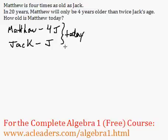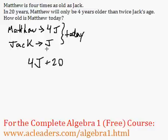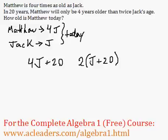But in 20 years — I'm going to write arrows here, otherwise they look like minuses — Matthew will only be four years older than twice Jack's age. So in 20 years, Matthew's age will be 4J plus 20, and Jack's age will be J plus 20. By then, Matthew will be only four years older than twice Jack's age, so twice Jack's age will be 2 times (J plus 20), and four years older than that gives us a plus four. So then they will be equal.